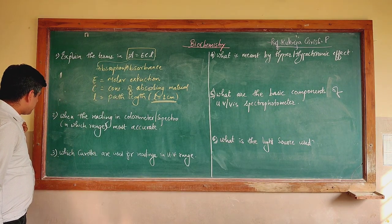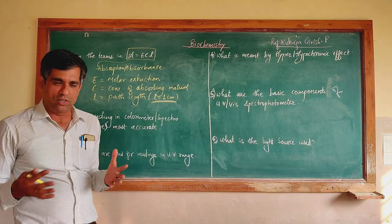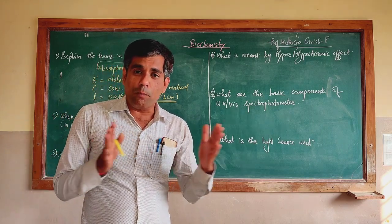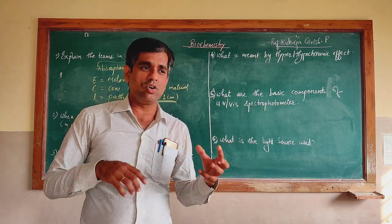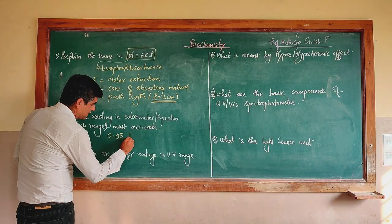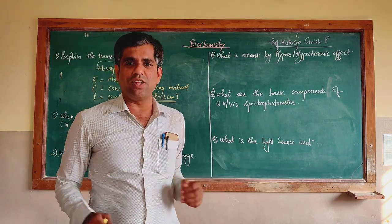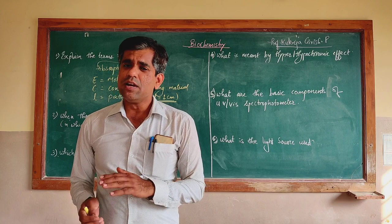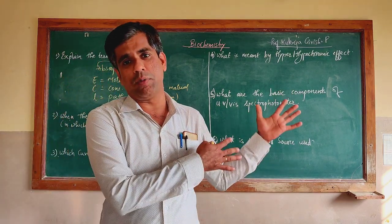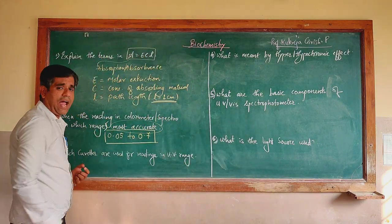The next question: in which range are the readings on a colorimeter or spectrophotometer most accurate? The range generally stated is between 0.05 to 0.7. This is the range where readings are most accurate. Below and above this range, readings may be accepted in many cases, but this range gives the most accurate readings. If a solution is highly concentrated and the reading goes above that, dilute it to bring it into this range.